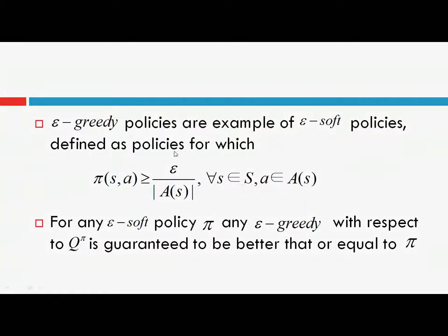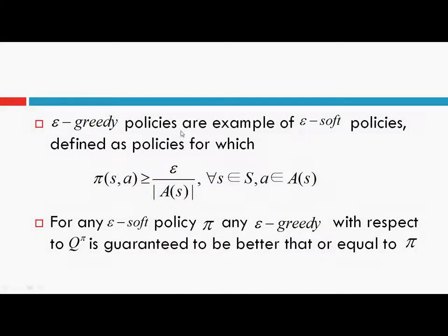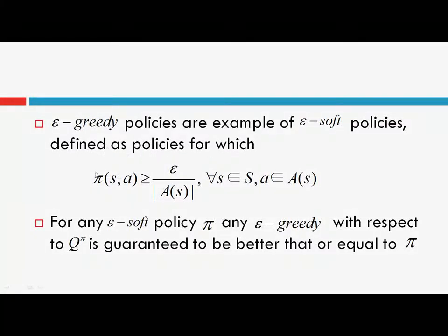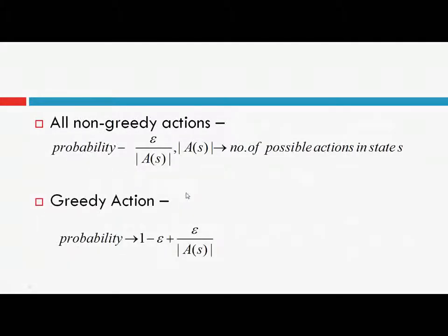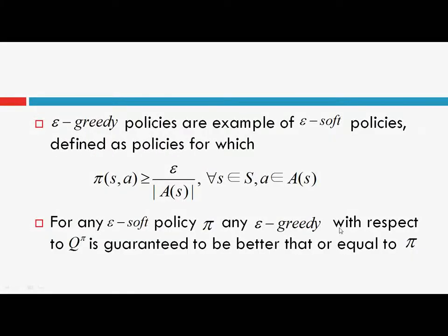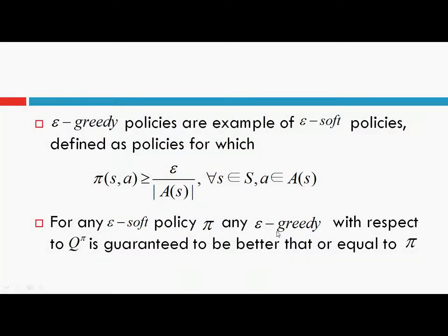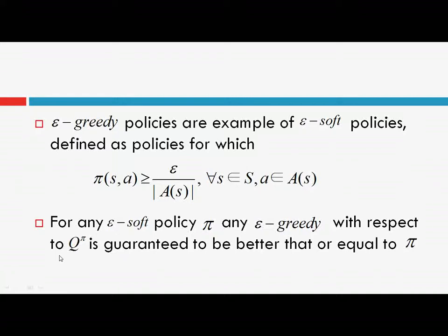These are examples of epsilon-soft policies, defined as policies for which the probability of selection of each state-action pair is greater than or equal to epsilon over mod A_s. We can see that the probability of selection of every action is at least epsilon over mod A_s. For any epsilon-soft policy pi, any epsilon-greedy policy with respect to q_pi is guaranteed to be better than or equal to pi.